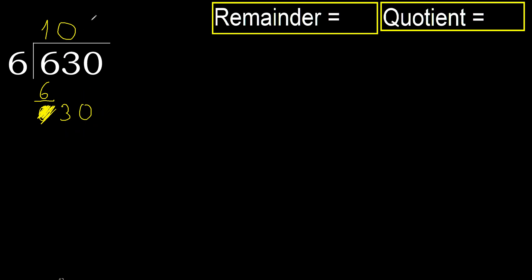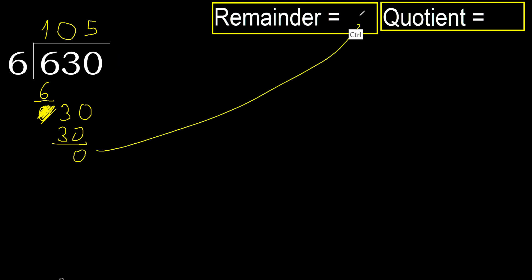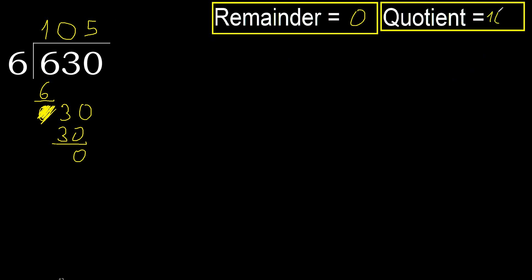6 multiplied by 5 is 30, which is not greater. OK. Subtract: 0. Next, there is no more number, therefore we finish. 630 divided by 6 is 105.